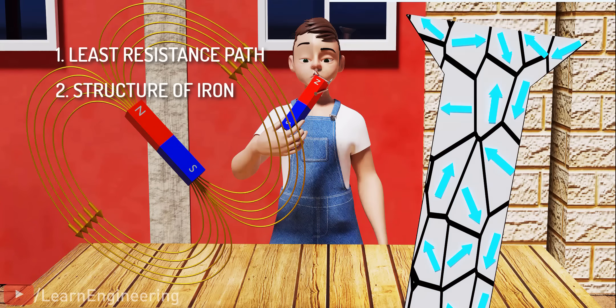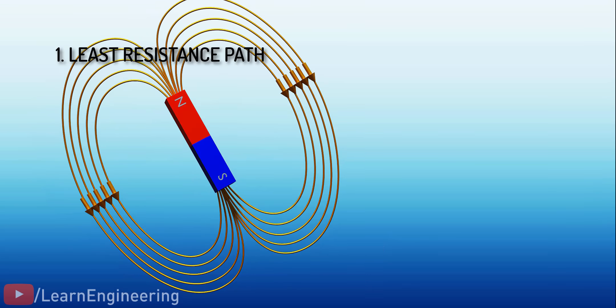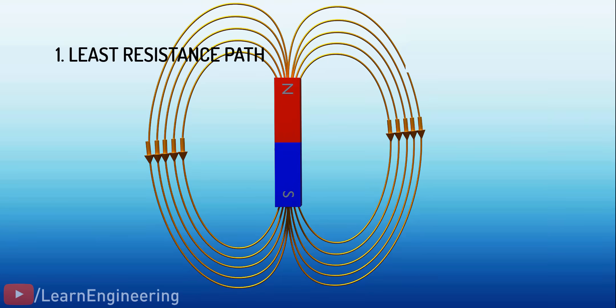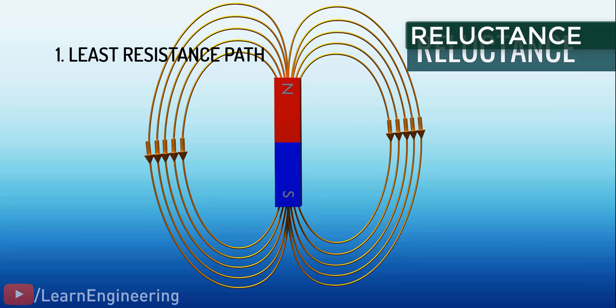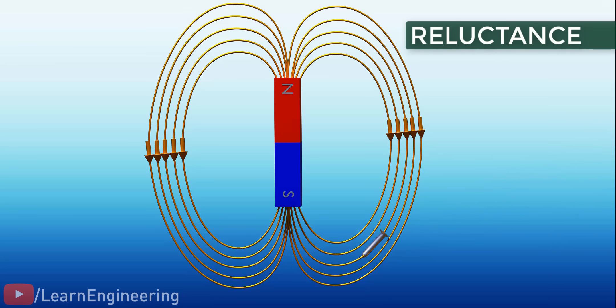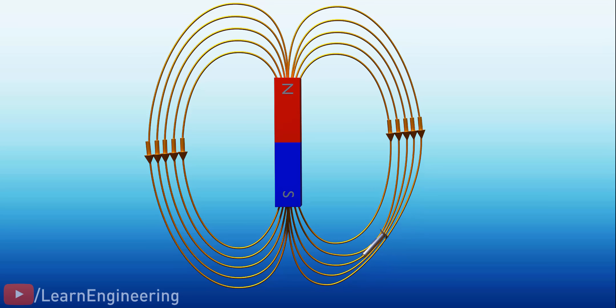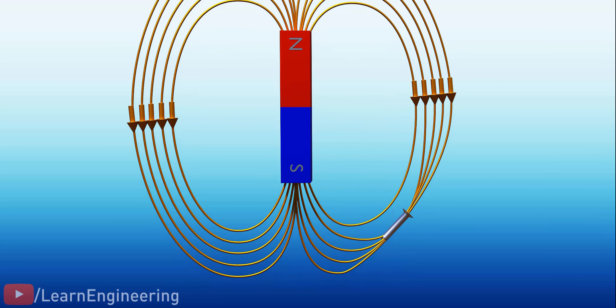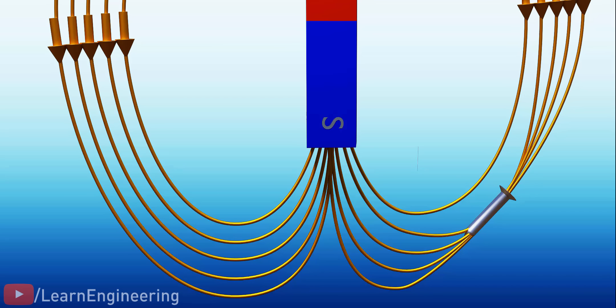Let's explore the resistance the magnetic field has to face. More specifically, this resistance is called reluctance. Magnetic flux always has a tendency to flow through the path of least reluctance. Maximum magnetic flux passes through the iron instead of the air, because iron's reluctance value is much lower than the reluctance value of air.